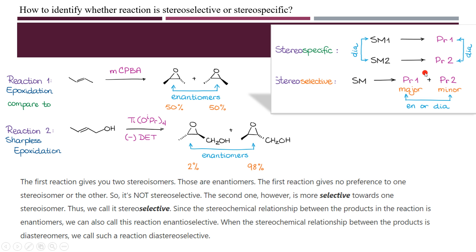So as you can see, the reactants must be stereoisomers of each other and the products are also stereoisomers of each other — that is a stereospecific reaction. In a selective reaction, one product is major and one is minor, and this could be enantioselectivity or diastereoselectivity. The first reaction giving 50-50% is specific; a reaction giving one major and one minor enantiomer is stereoselective. This was all about stereoselectivity and specificity. Thank you.